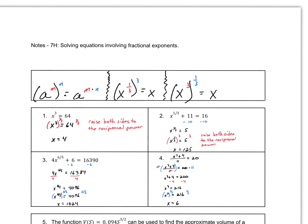Taking a look at this example: when you have a variable such as x with an exponent of one-third, if we were to raise that to the power of three, then we have this power to a power. One-third times three, or three over one, that's going to be three-thirds, which is one. So x to the one-third, raised to the third, is equal to x.